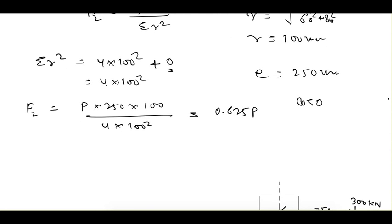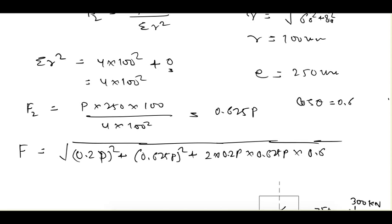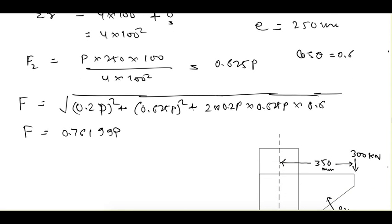Now we can compute the net force F using F = √(F1² + F2² + 2·F1·F2·cosθ) = √((0.2P)² + (0.625P)² + 2 × 0.2P × 0.625P × 0.6). Calculating this gives F = 0.76199P.